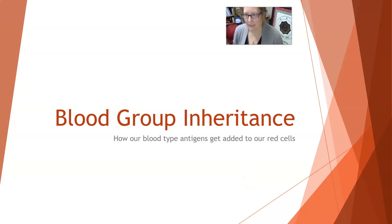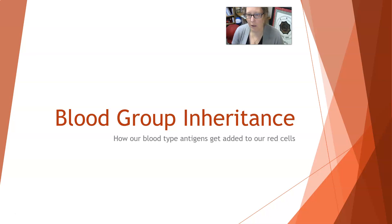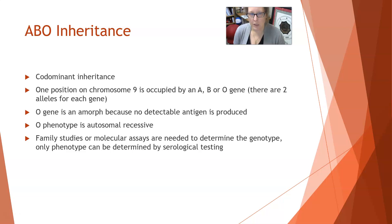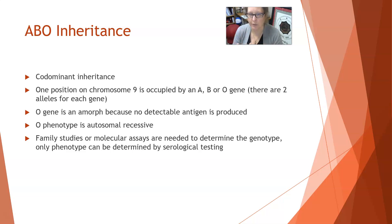Hi everybody, this is Dr. A and I'm going to bring you the first in a short series that's been requested. I'm going to start with blood group inheritance — this is immunohematology, about how our blood type antigens get added to our red cells. ABO inheritance is co-dominant, meaning they are equally expressed, and just like everything else that's genetic, you'll get one gene from your mom and one gene from your dad.